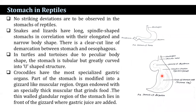In reptiles, there is no striking deviation from the basic pattern. Snakes and lizards have long spindle-shaped stomachs in correlation with their elongated and narrow body shape, with a clear line of demarcation between stomach and esophagus. In turtles, due to their peculiar body shape, the stomach is tubular but greatly curved into a U-shaped structure. In crocodiles, they have more specialized gastric organs; part of the stomach is modified into a gizzard-like muscular organ that grinds food. The thin-walled glandular region lies in front of the gizzard, where gastric juices are added.